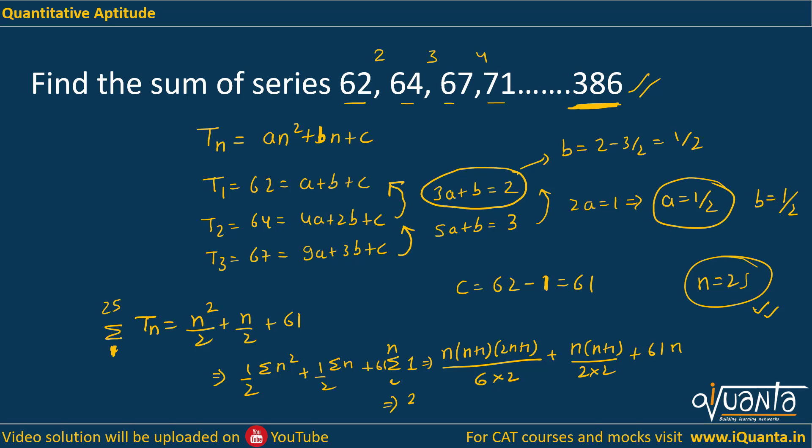Here you will be getting 25 into 26 into 51 by 12 plus 25 into 26 by 4 plus 61 into 25. This gives us 4450 as the answer. So that's how we solve it. If there is any doubt, please comment. Thank you.